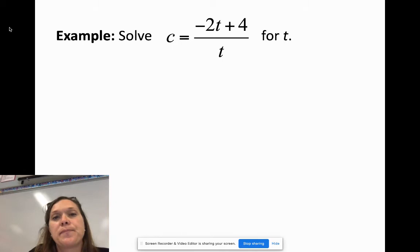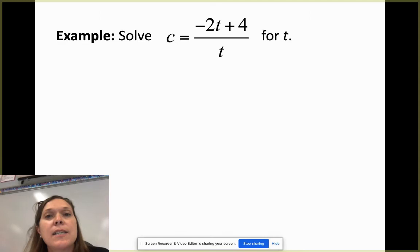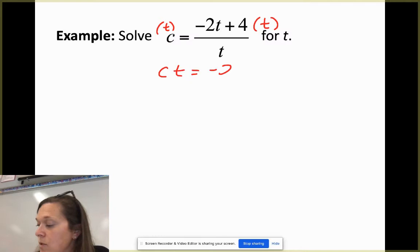Example number three. Now we have C is equal to negative 2T plus 4 all over T. So again, we have two T's, but notice they are not in the same spot. One's up in the numerator of that fraction, and the other one's in the denominator. So we need to do some manipulation before I can get all the pinks to one side and all the blues to the other side. So I need to get rid of the fraction itself. So how do we get rid of a divide by T? Well, we would multiply both sides by T.